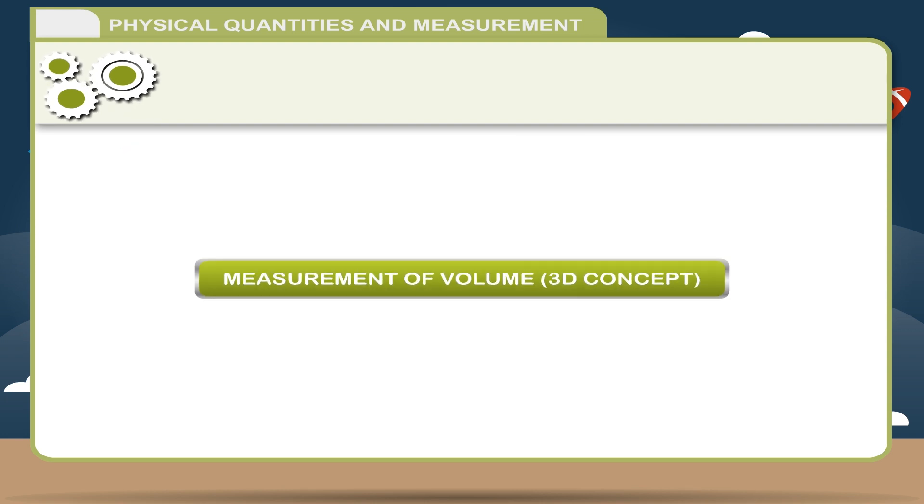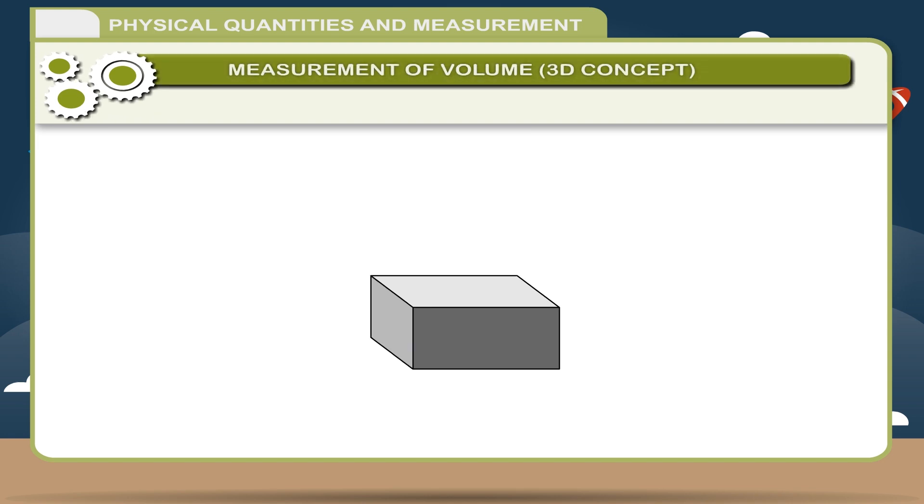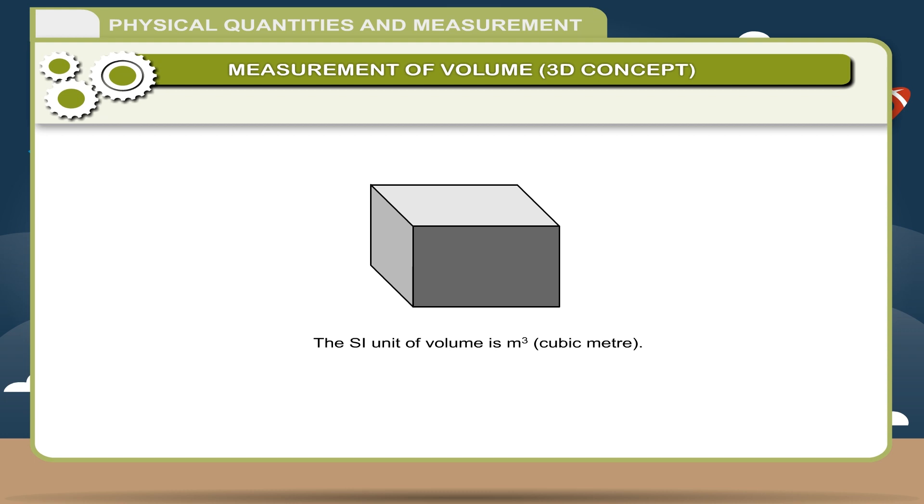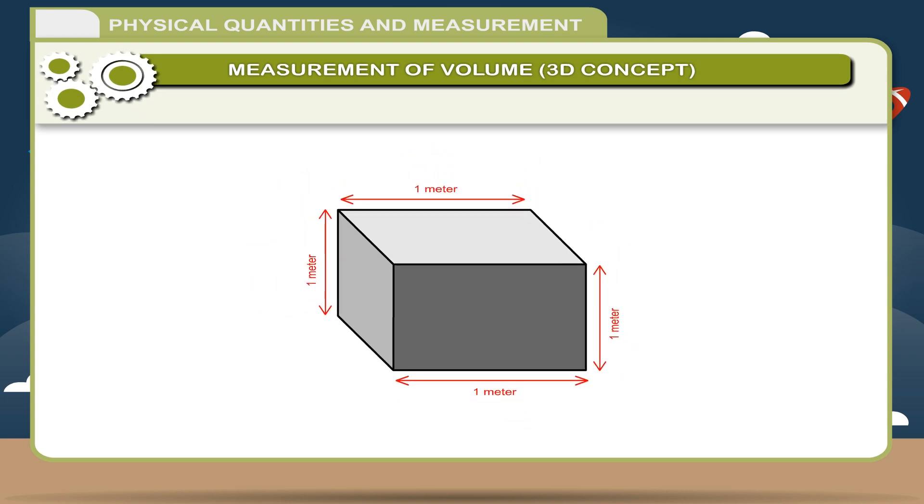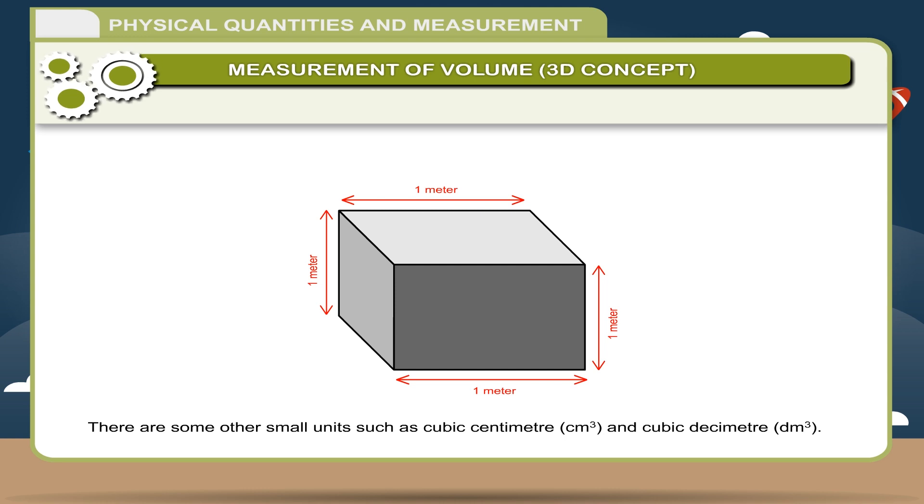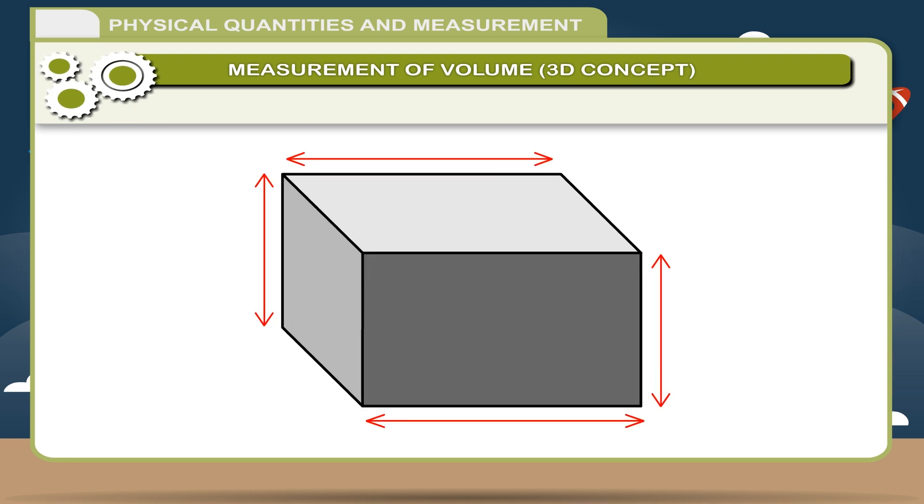Measurement of Volume 3D Concept. Volume of an object is the space occupied by it. The SI unit of volume is cubic meter. 1 cubic meter is the volume occupied by a cube whose each side is equal to 1 meter. There are some other small units such as cubic centimeter and cubic decimeter. 1 cubic centimeter is the volume occupied by a cube whose side is equal to 1 centimeter.